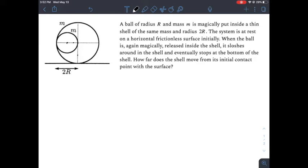Today we have a ball of radius R and mass m magically put into a thin shell of mass m and radius 2R. The system is at rest on a horizontal frictionless surface initially. When the ball is again magically released inside the shell, it sloshes around and eventually stops at the bottom of the shell. How far does the shell move from its initial contact point with the surface?